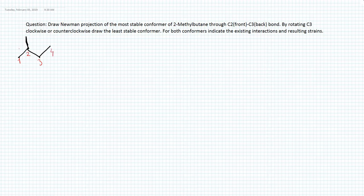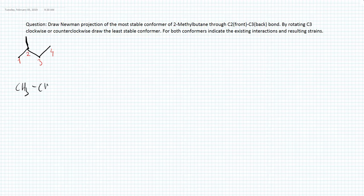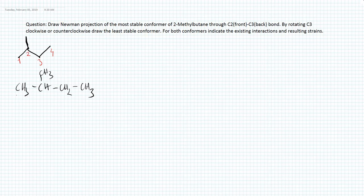If we translate this skeletal structure into a condensed structure, we can see what kind of groups or atoms are on carbon 2 and carbon 3. The condensed structure is: C1 is CH3, C2 is CH with a methyl branch (CH3), C3 is CH2, and C4 is CH3. Let's number the atoms so we can see them easily.